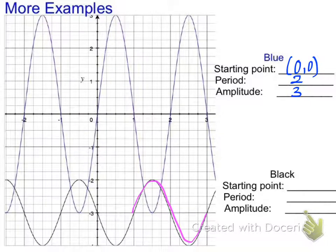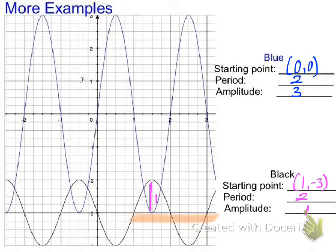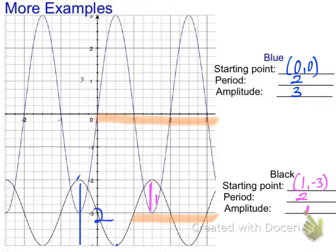Now the black curve. One complete period starts at (1, −3). The period is 2 again. The amplitude is only 1 because it goes up 1 from the midline — make sure you're measuring from the midline, not the total height of the wave. Another approach: find the distance from maximum to minimum, which is 2 total, then cut that in half to get the amplitude of 1.